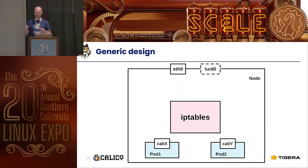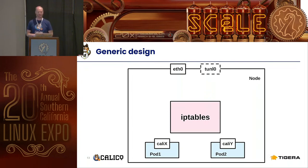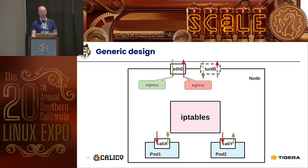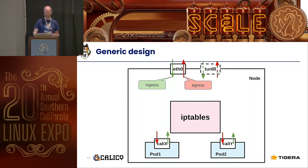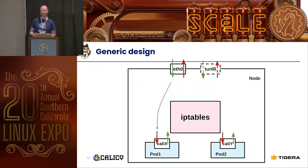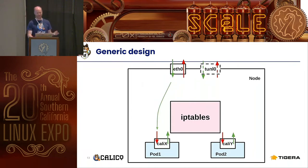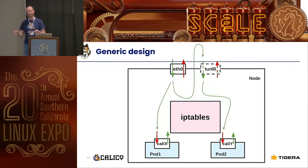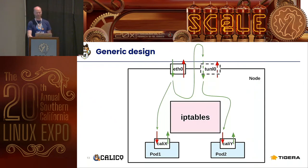In the generic design of the data plane, when you look at a single node in your cluster, it has a bunch of pods connected to the host namespace through veth devices. We attach our BPF programs to the ingress and egress of all the devices we are interested in. When a packet comes in, our program has a chance to process it and decide where it should go next — forward it to a pod, or if we're using an IPIP overlay, process the IPIP packet and pass it to the tunnel interface, which then determines where the packet continues.